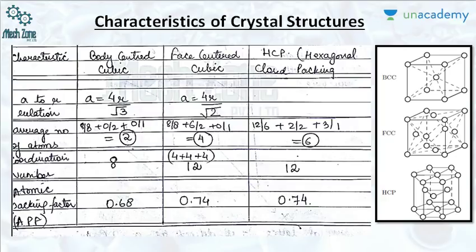For hexagonal closed packing, there is no need to learn the A-to-R relation. The coordination numbers are 8, 12, 12 for BCC, FCC, and HCP respectively — you should be aware of this, as this table is very important and many questions can be asked from it. The atomic packing factor values are 0.68, 0.74, and 0.74. In BCC, atoms are at the body center and the corners. In FCC, atoms are at the center of each face plus the corners.